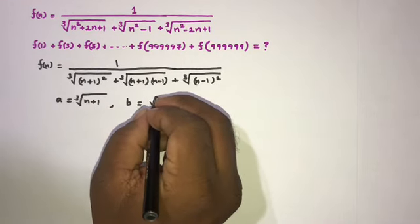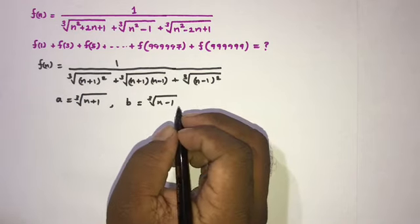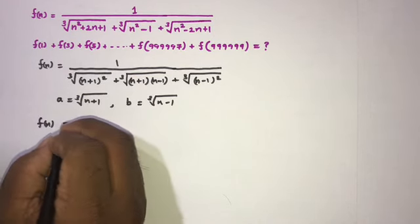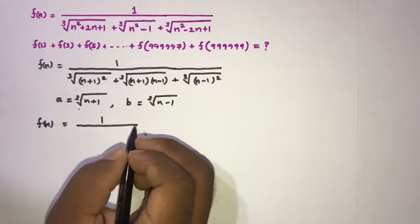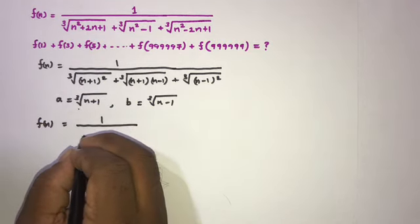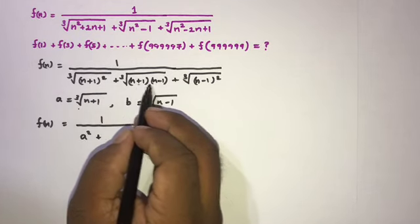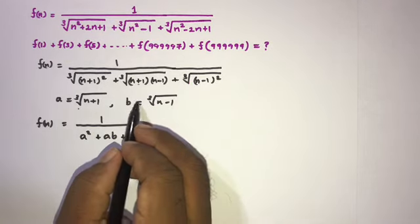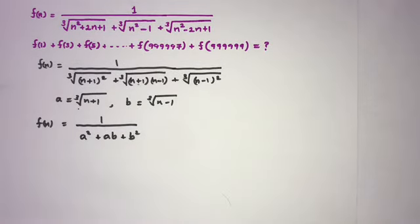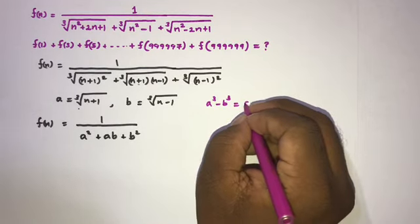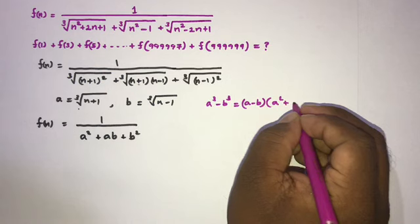Using a and b, the function f(n) becomes 1 over (a² + ab + b²), since cube root of (n+1)² is a², cube root of (n+1)(n-1) is ab, and cube root of (n-1)² is b². We recognize that this denominator appears in the difference of cubes formula.